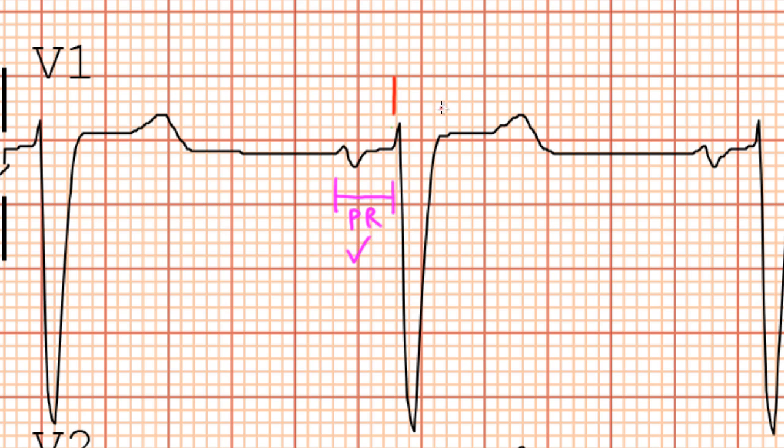You'll notice, however, that the QRS duration is wide. It's wider than three small boxes. So, in this case, this is a bundle branch block. This EKG is an example of a patient with a left bundle branch block. However, we'll talk in more detail about bundle branch blocks later. But this is just to give you an idea of what it looks like.